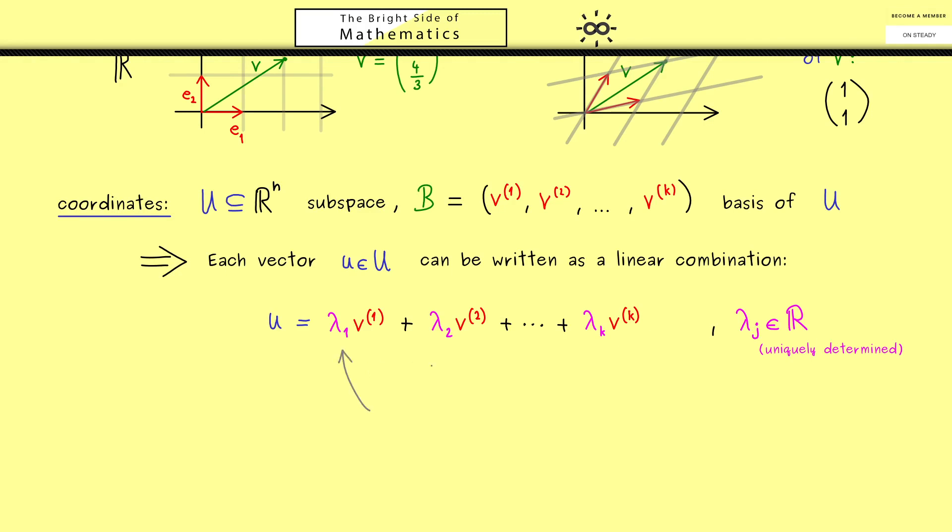Moreover please remember here we have exactly k numbers for the coordinates. And these coordinates exist for all vectors u in our subspace U. And of course if we have these uniquely determined numbers and the basis B we can regenerate the original vector u in R^n. And for this reason there is a special notation one uses sometimes to denote the vector u.